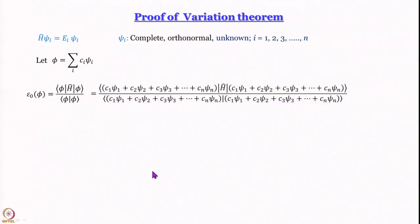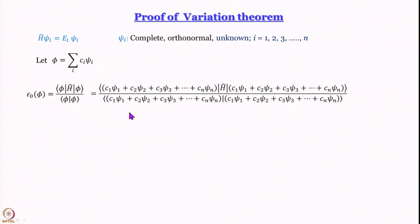Writing it all out: φ = c₁ψ₁ + c₂ψ₂ + c₃ψ₃ + … + cₙψₙ. The numerator has the complex conjugate of φ left-multiplying Ĥ operating on φ. In the denominator, we have the complex conjugate of φ multiplied by φ itself, integrated over all space.